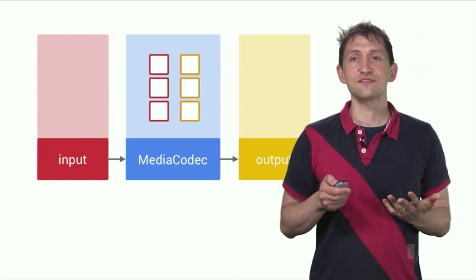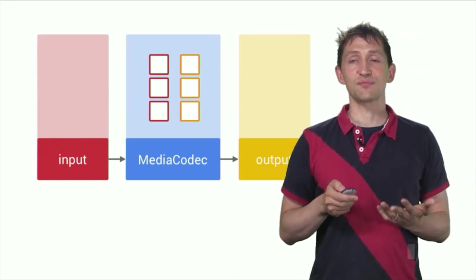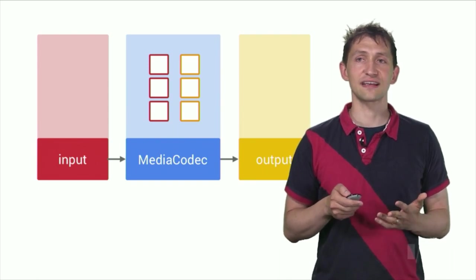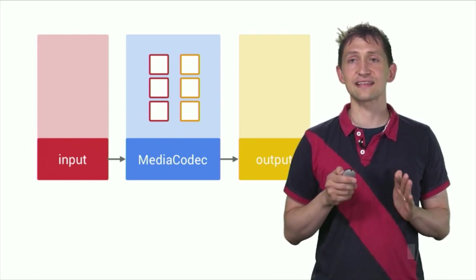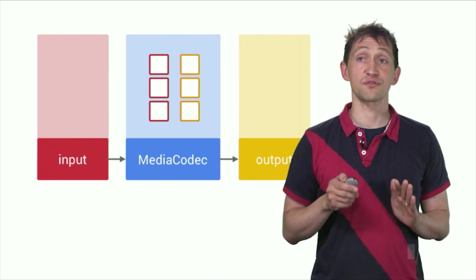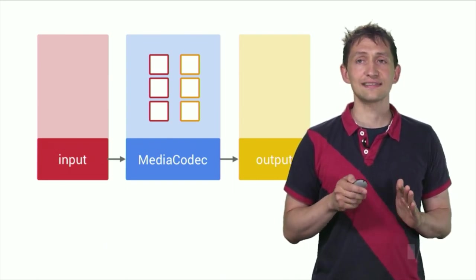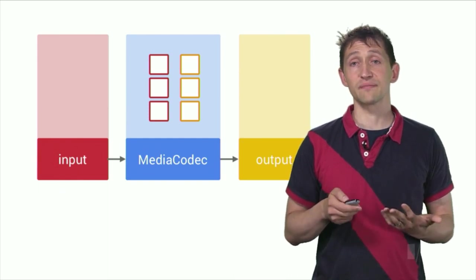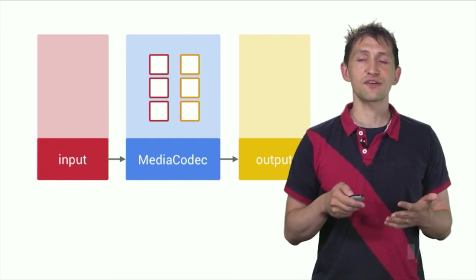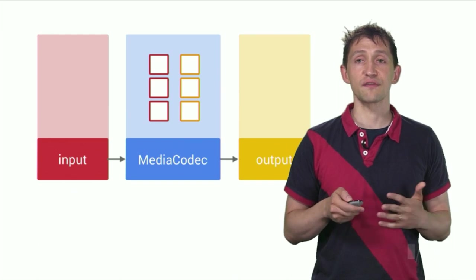By default, codecs use byte buffers for both input and output data. However, video codecs can be configured to use hardware-accelerated surface buffers for raw video. This is the preferred mode to operate hardware-accelerated video codecs, as it allows them to work without memcopy. In either mode, media codec uses buffer indices to refer to buffers.